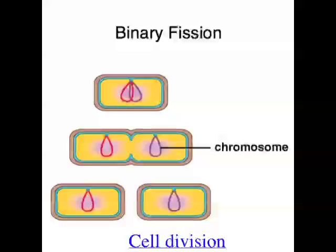The first type occurs in prokaryotic cells and is called binary fission. The circular DNA in a prokaryote replicates, and then the cell splits into two by a process called cytokinesis. You end up with two daughter cells that are both exactly the same, each with a single circular chromosome — two identical daughter cells from one parent cell.